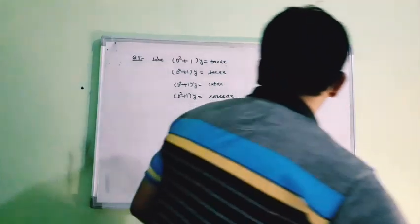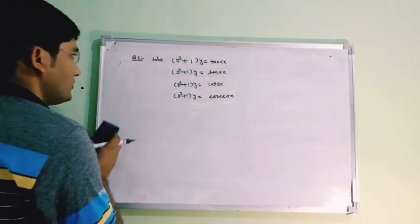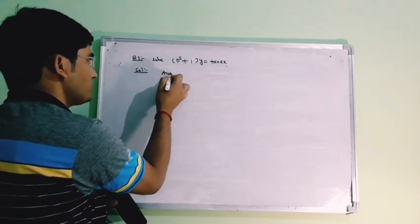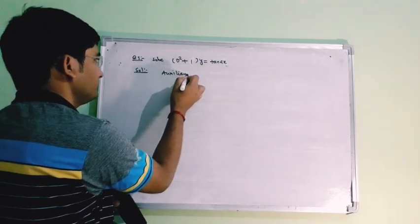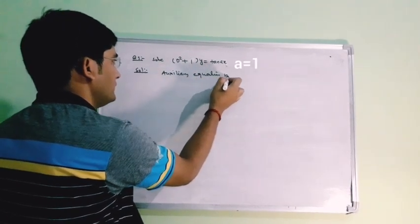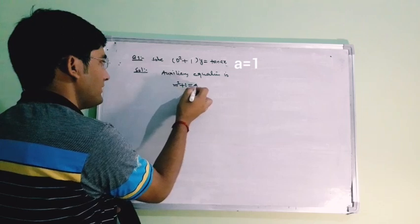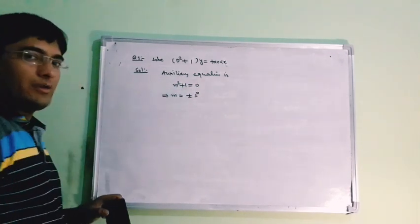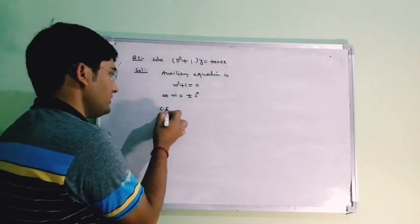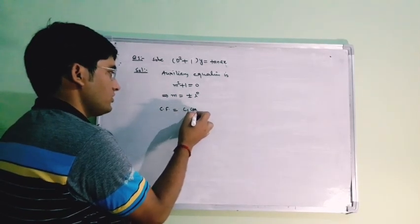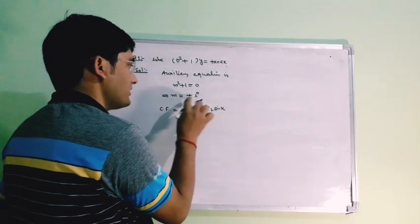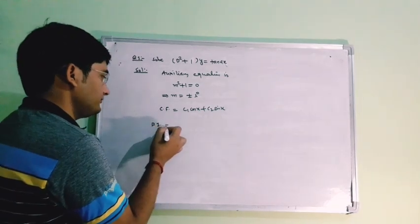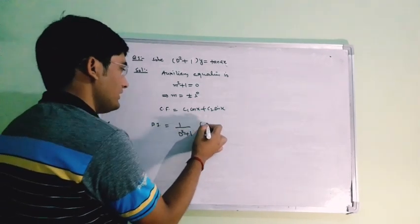Let us solve the first problem: (D²+1)y = tan(x). The solution begins with the auxiliary equation. Replacing D by m, we get m²+1 = 0, so the roots are m = ±i. Therefore, the complementary function is c₁cos(x) + c₂sin(x), with the real part as alpha = 1. The particular integral is 1/(D²+1) of tan(x).